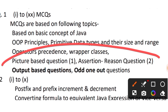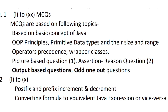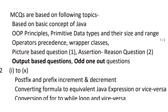Something new introduced by the council this year is picture-based and assertion-reason questions. There will be one picture-based question in MCQ and two assertion-reason questions. I have already made separate videos on picture-based and assertion-reason questions on my channel. Additionally, output-based questions and odd-one-out questions can be asked — odd one out means four options are given and one will be different from the others.